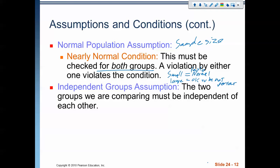The last assumption we need to meet is that the two groups we're comparing are independent of each other — meaning there's no collusion, that one is not influencing the other.